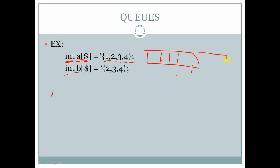If we insert two more elements, 5 and 6, the size of the queue will be automatically increased. If we then remove these two elements 5 and 6, the size of the queue will be automatically reduced back to 4.